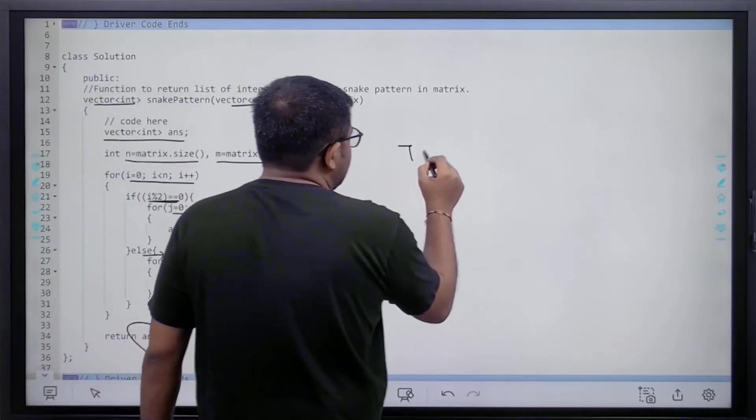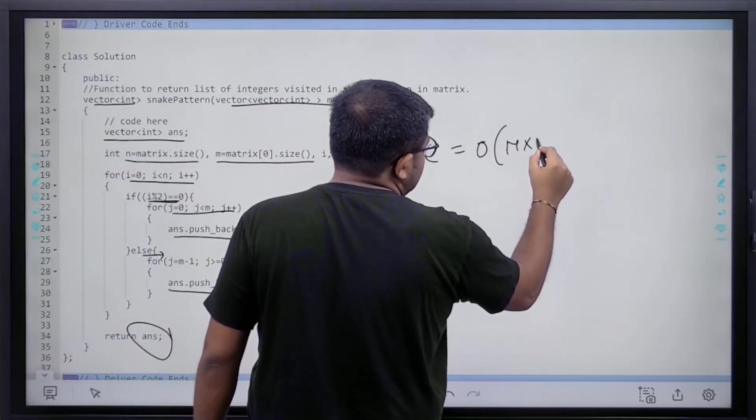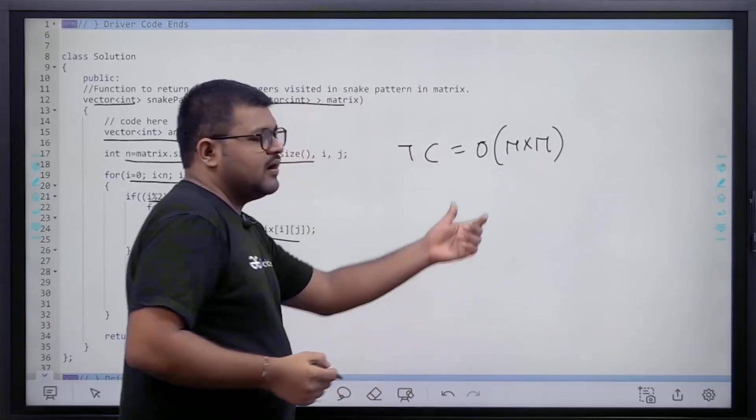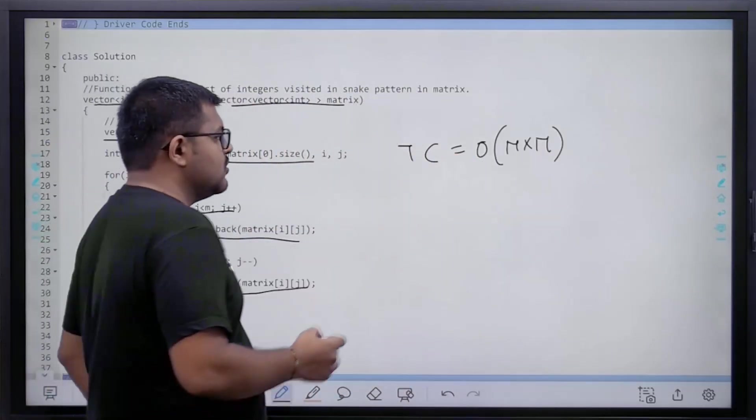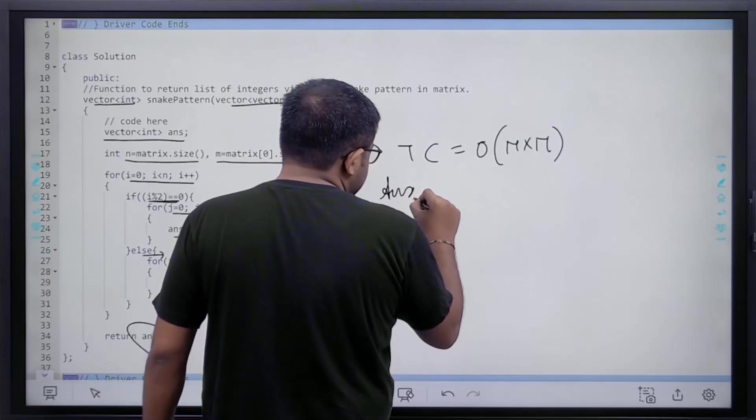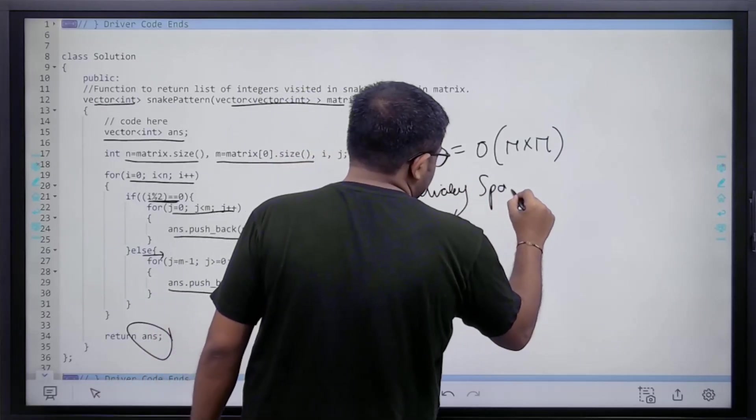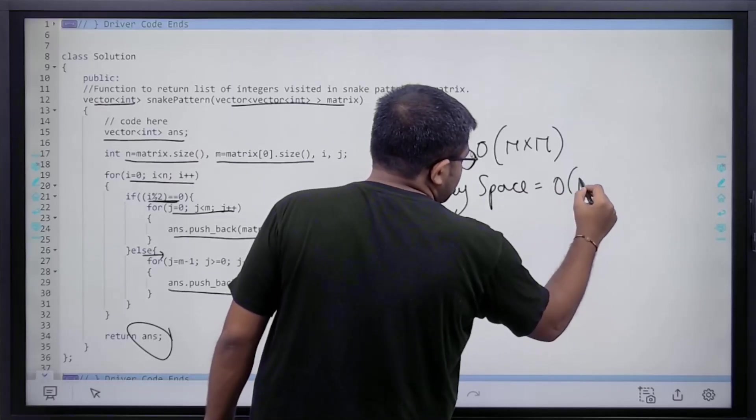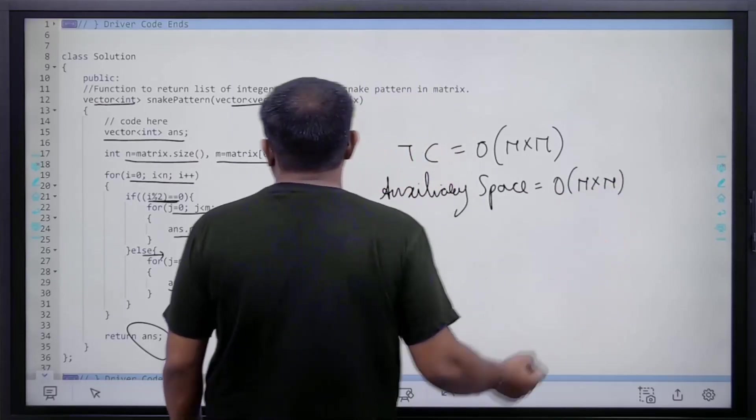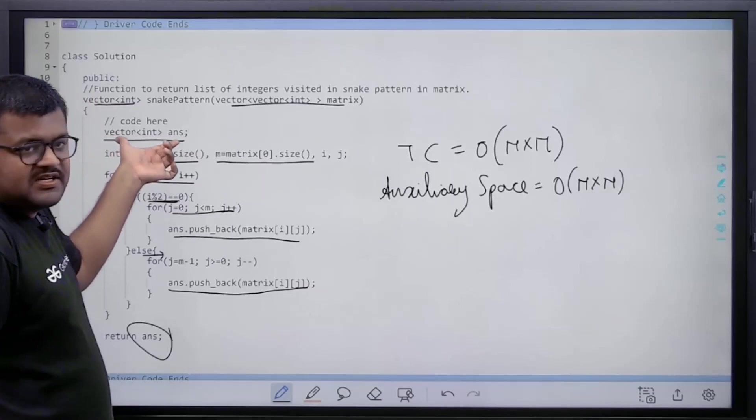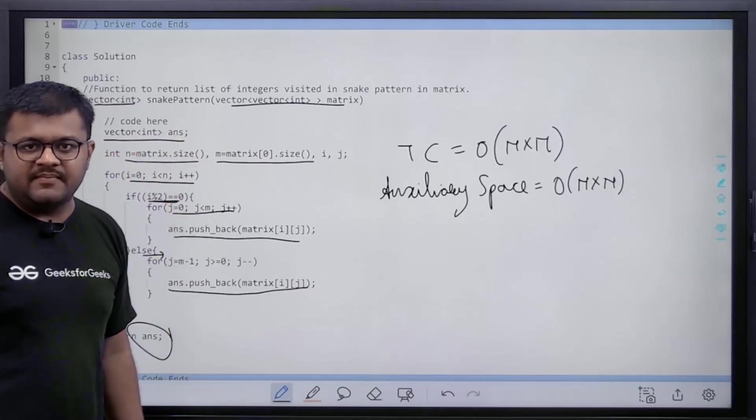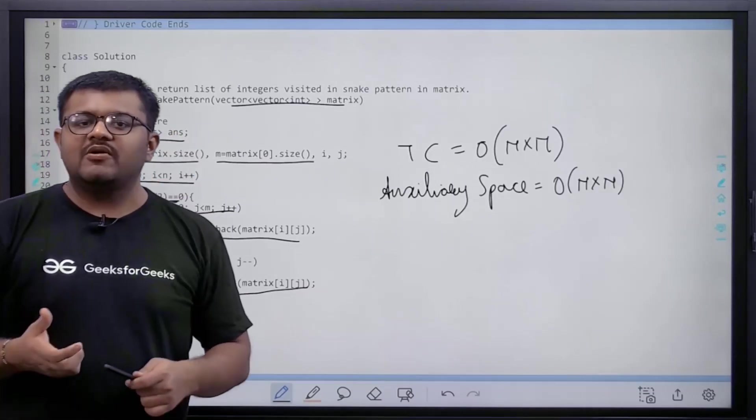What would be the time complexity? Time complexity would be O(n squared) because we are traversing the matrix. And what would be the auxiliary space? The auxiliary space will also be O(n squared) because we are using this answer list which will contain n squared number of elements. I hope you have understood this. Now let's submit this code.